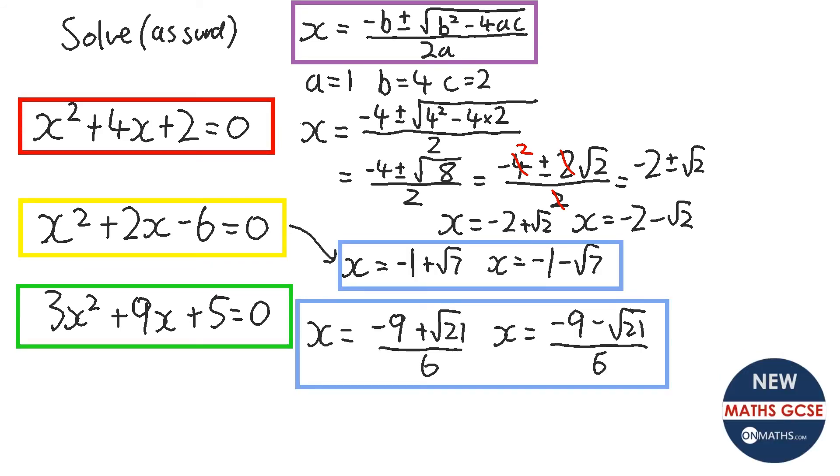Okay, answers are shown. As you can see, the second one cancelled. Sorry, we could simplify and we could get rid of the fraction, but the third one, you can't really do anything with that. You could write minus one point five plus root 21 over six, or just leave it as it is, and that's absolutely fine. Okay, so we're going to end on a puzzle.